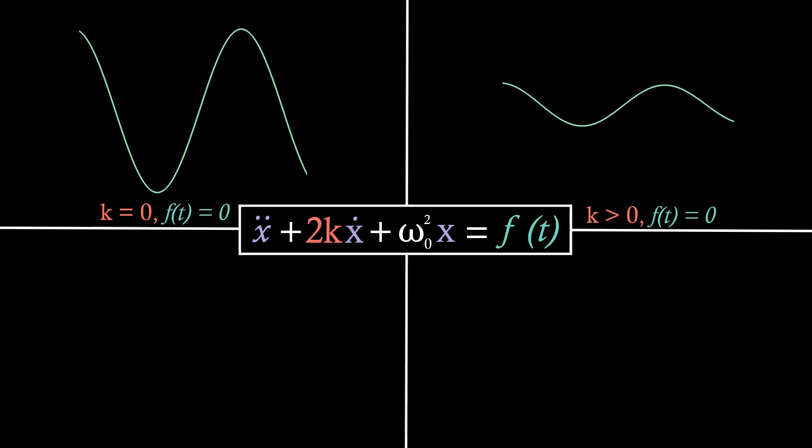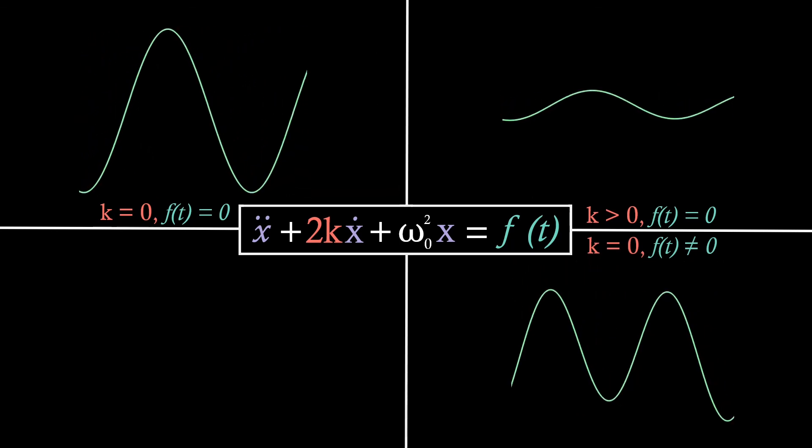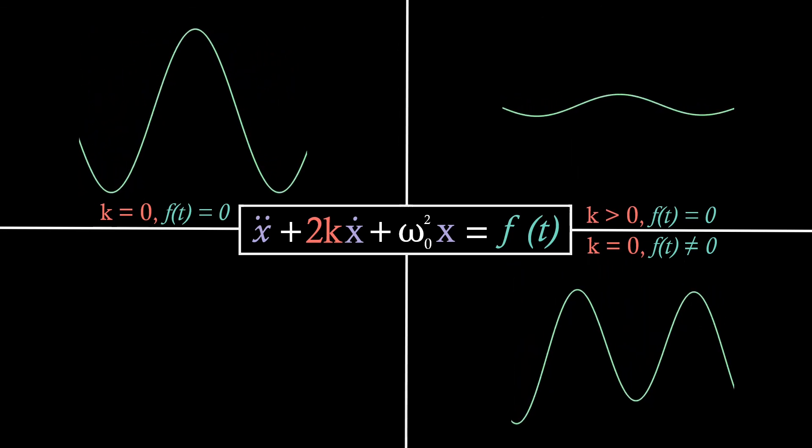The third case is forced, undamped, simple harmonic motion. What we'll see here is a strange oscillation. This is because our solution sums different frequencies of sine and cosine curves, causing this quite erratic oscillation.